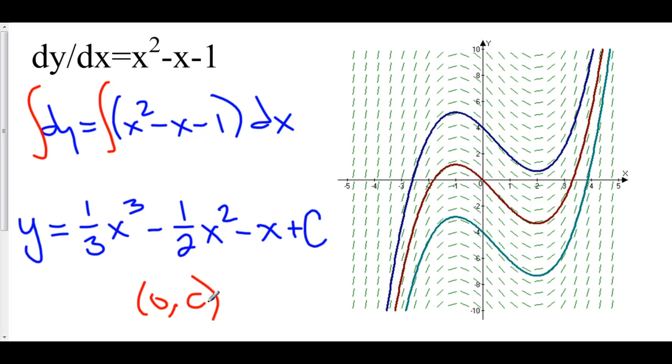So, in reality, this C represents where my particular solution, y, crosses the y-axis. So, for example, if C = 4, we would come up with this blue, this dark blue solution up above.